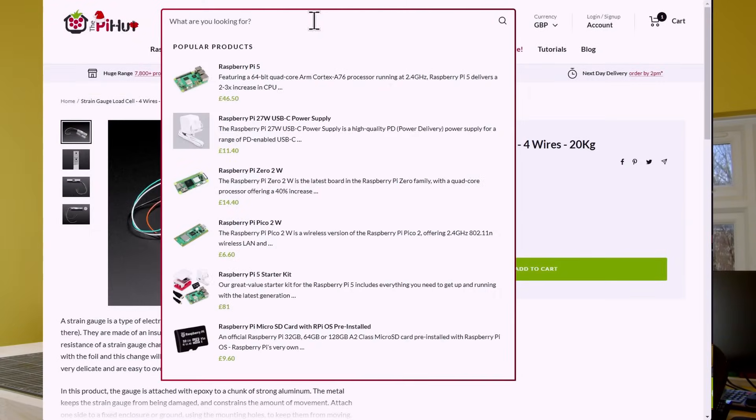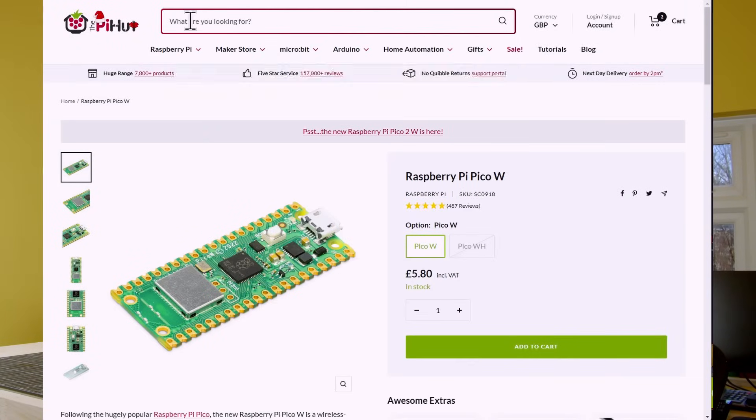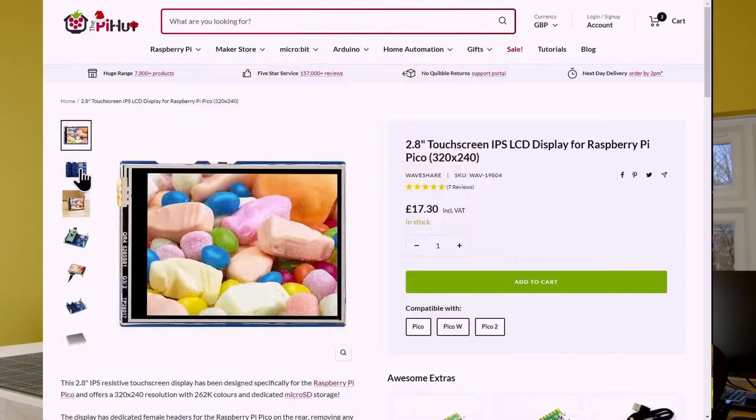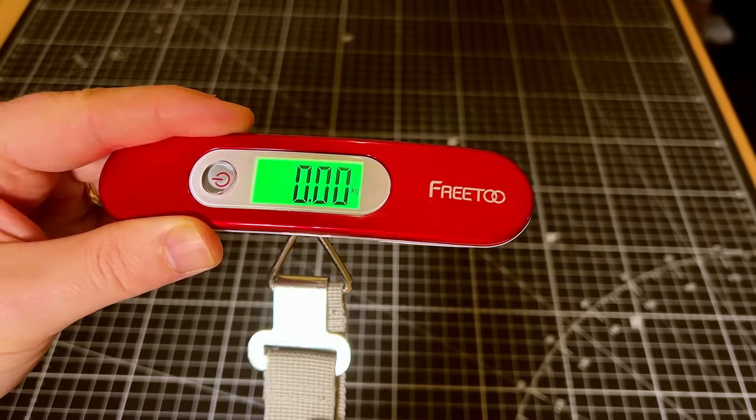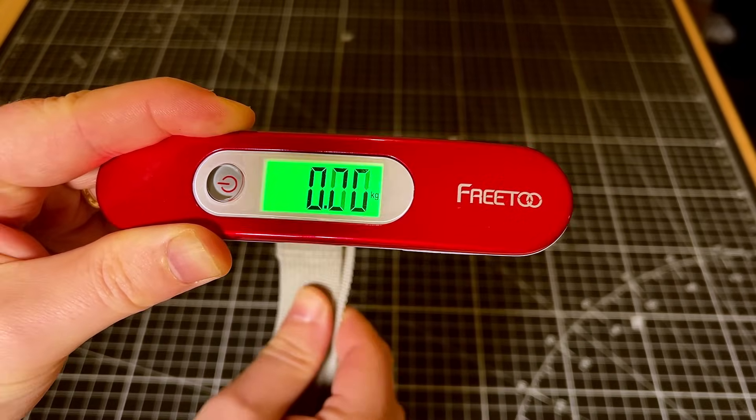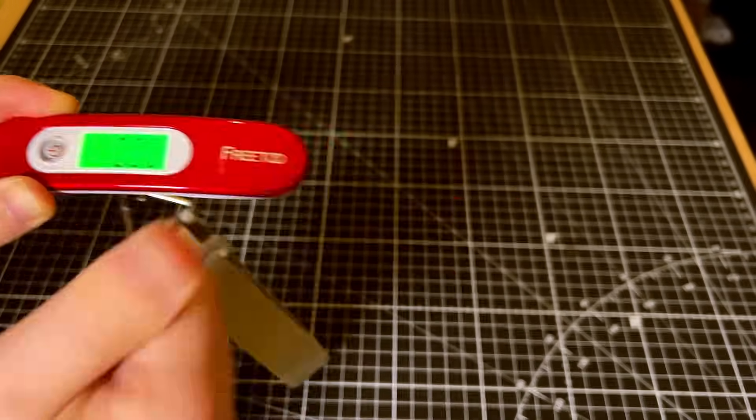The only other piece we are missing is actually a way of measuring the thrust. I could buy a load cell, calibrate it, attach a microcontroller to it, and some sort of display. Or I could repurpose a luggage scale, which has a resolution of 10 grams, or 0.1 newtons, which should do the job.